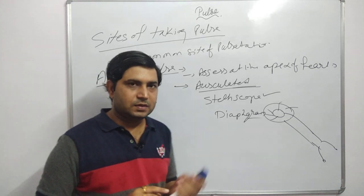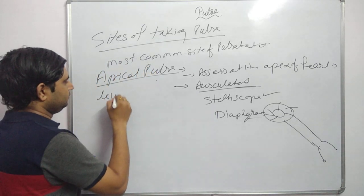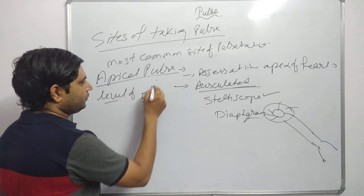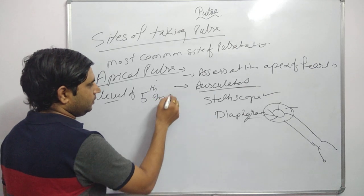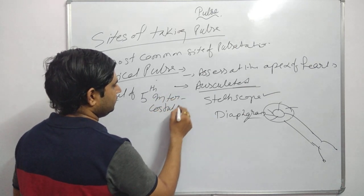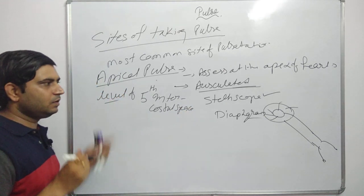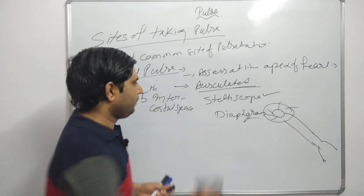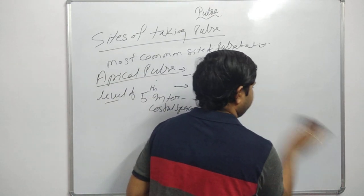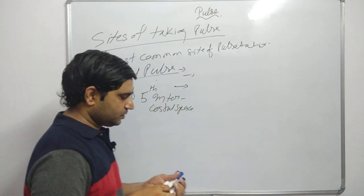Now let us discuss the level of the apical pulse site. It is at the fifth intercostal space. Let us see this in a diagram - here is the midline, the sternum on the midline, and the sides.